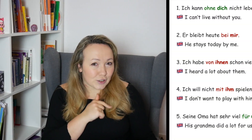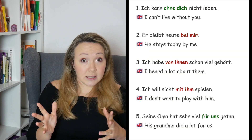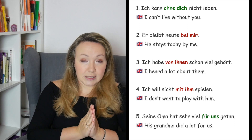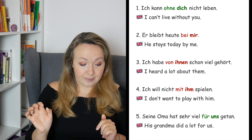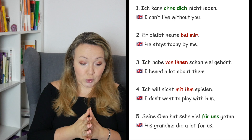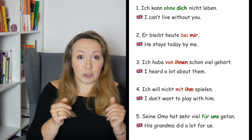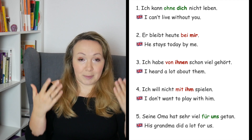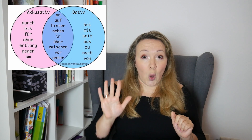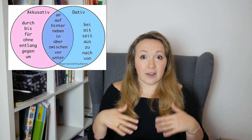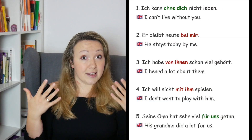Welcome back. Now let's see the correct answers to the quiz and discuss why it is accusative and why it is dative. Sentence number one: 'Ich kann ohne dich nicht leben' — I can't live without you. Why is it 'dich'? Because 'ohne' is a preposition that always comes with accusative, and as you can see on the screen, there are always accusative prepositions and always dative prepositions, and that helps us to identify the case.